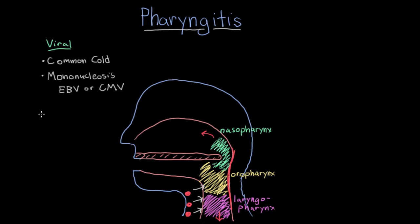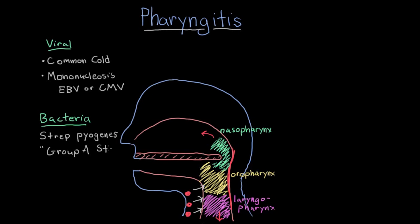So viruses are a common cause of pharyngitis, but there's also bacteria. The most common bacteria in pharyngitis is known as Streptococcus pyogenes. This is also commonly referred to as Group A Strep — 'A' being the specific type of Streptococcus, as there's also Group B, Group C. Group A Strep is specifically Streptococcus pyogenes, and even more commonly, this is called Strep throat.